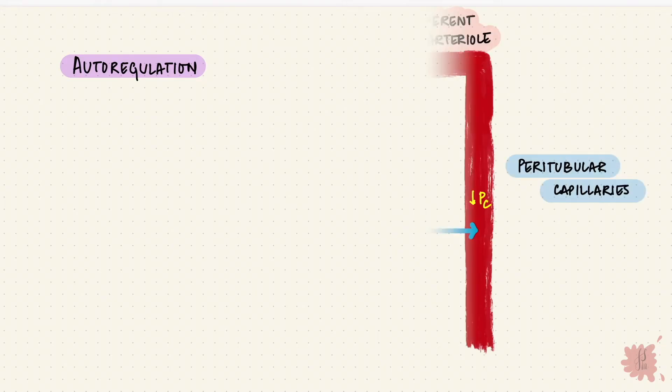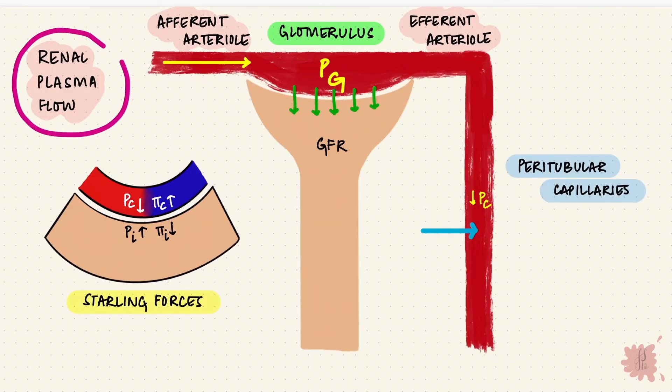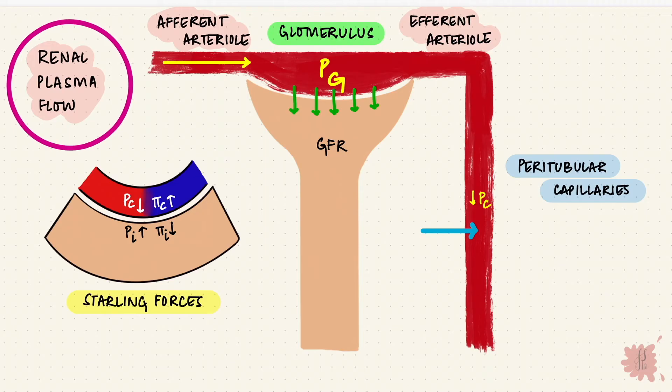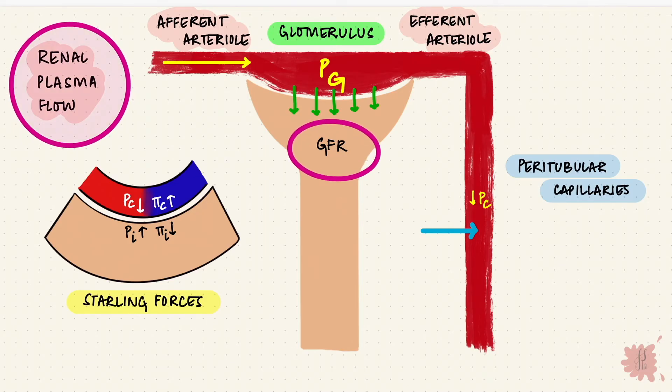This circulation is auto-regulated, meaning it's regulated by itself over a wide range of pressure changes. Otherwise, if the renal pressure changes just a little, the GFR would also change and renal excretion would change every time. So GFR and renal plasma flow go together — by regulating the renal plasma flow, we can regulate the GFR. We regulate flow by changing the resistance in the afferent and efferent arterioles.